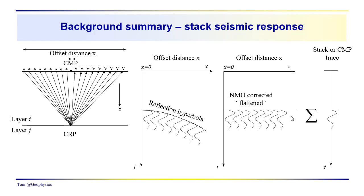This summation process is a matter of summing all the traces in the gather together after they've been NMO corrected — normal moveout corrected — to give us this single reflection event. Notice that these times are all the same and they correspond to the straight up-and-down time. That's why these traces are referred to as normal incidence or coincident source and receiver traces.